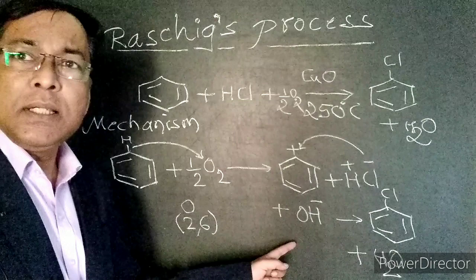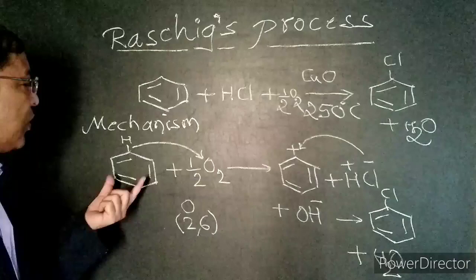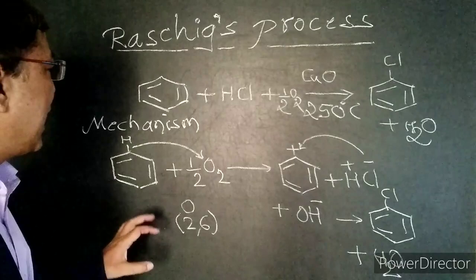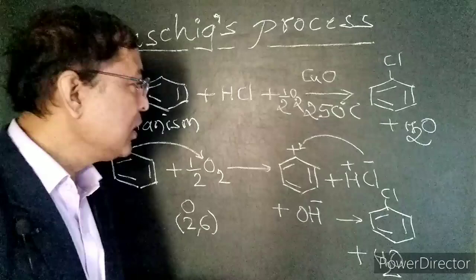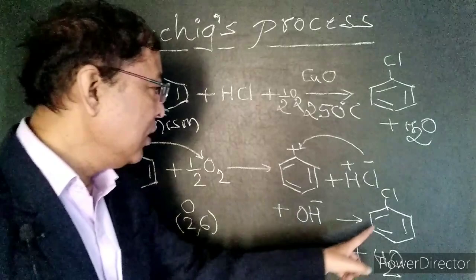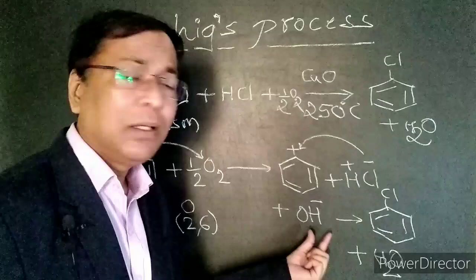So this is the mechanism of Rasig's process. Once again: benzene reacts with the oxygen atom, which takes the bonding electrons and hydrogen from benzene, leaving benzene as a cation and producing OH⁻. When this benzene cation reacts with HCl, the negative chlorine attacks the positive center and we get chlorobenzene, while H⁺ combines with OH⁻ to give water.